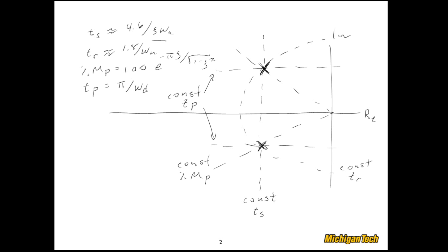Turns out that when we're getting into control system design later, these lines could be very important because they tell us how we can move around in the complex plane and either maintain a constant rise time or change the percent overshoot, etc. So it's good to have a nice understanding of this.